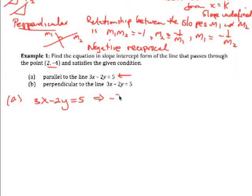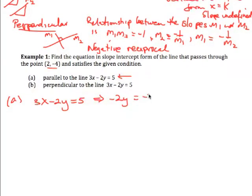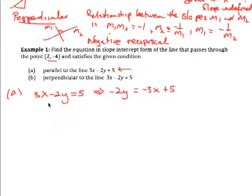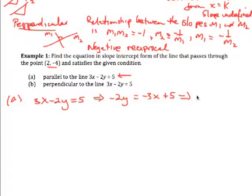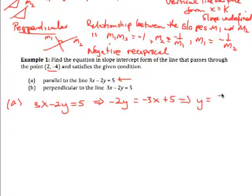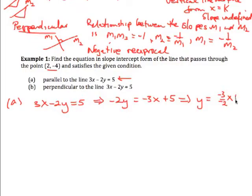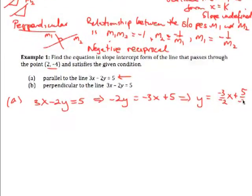This implies then that -2y equals -3x plus 5 if I subtract 3x from both sides. So this implies then that y is equal to -3 over -2x plus 5 over -2.